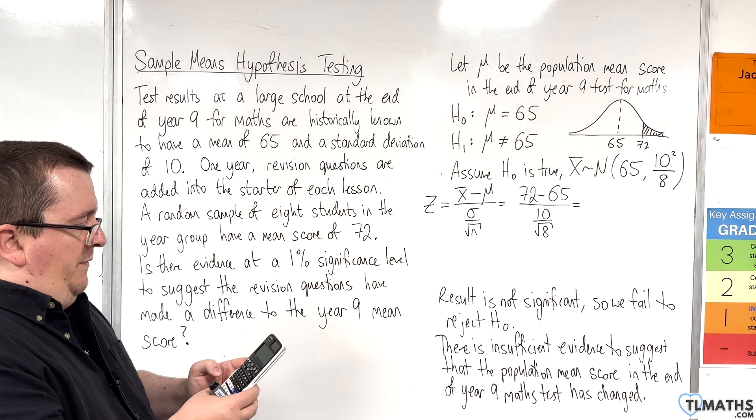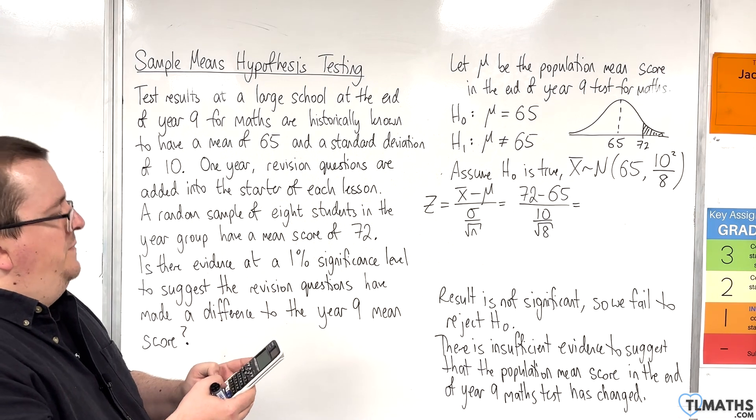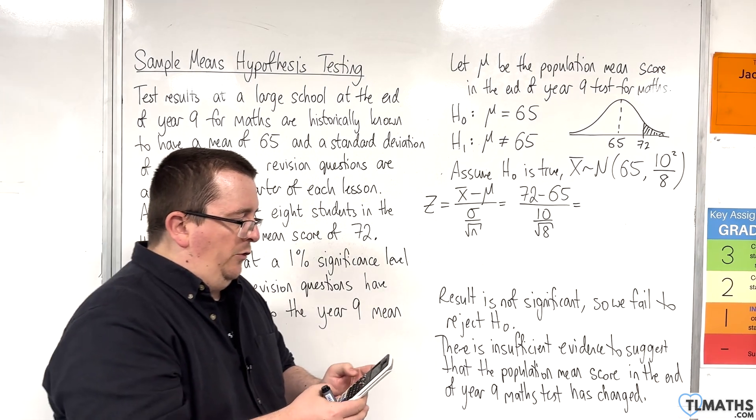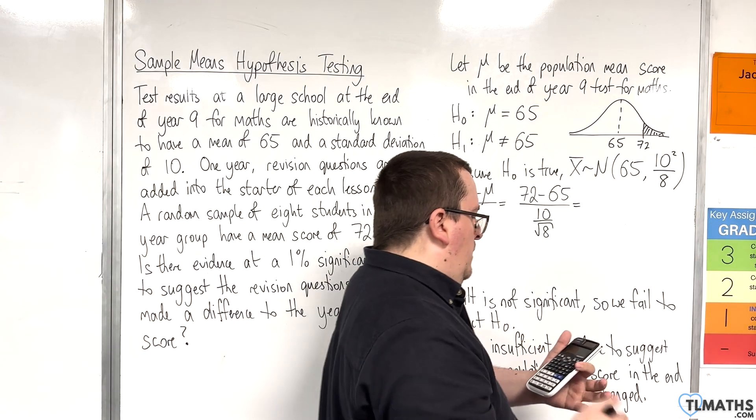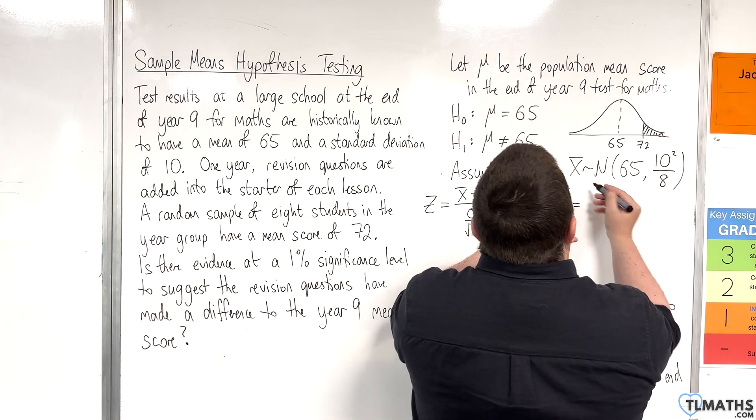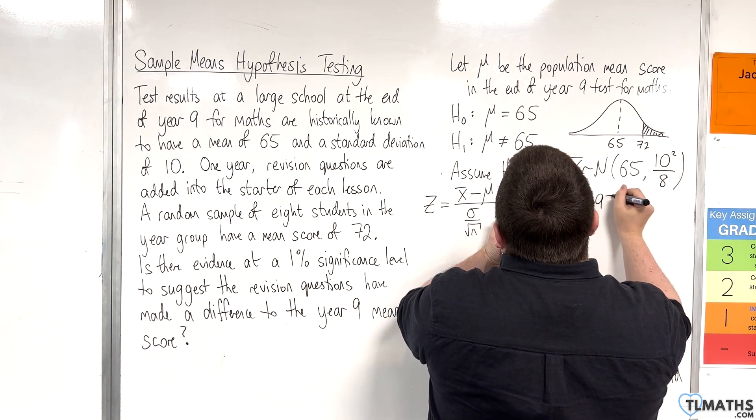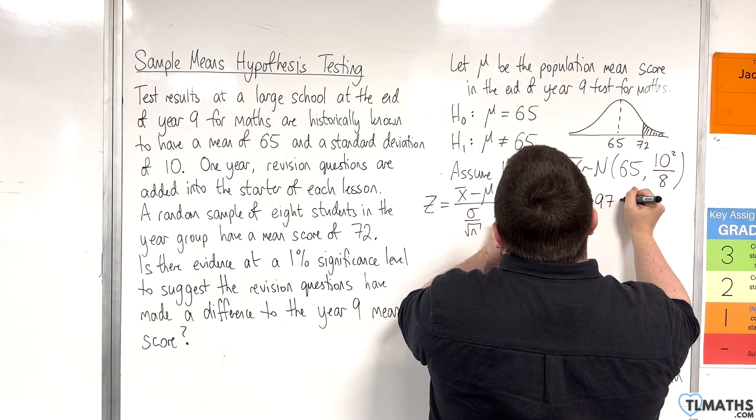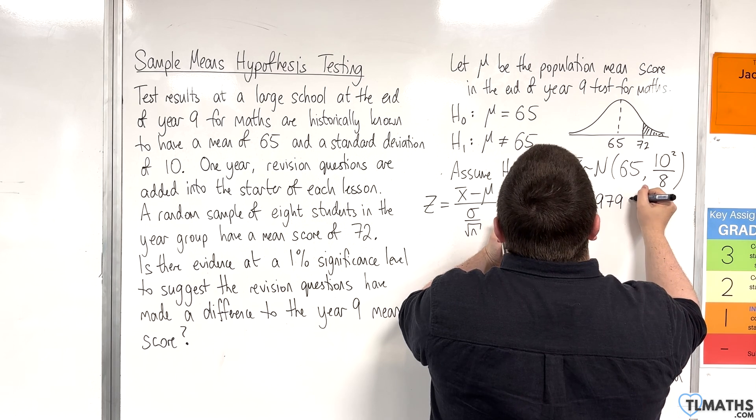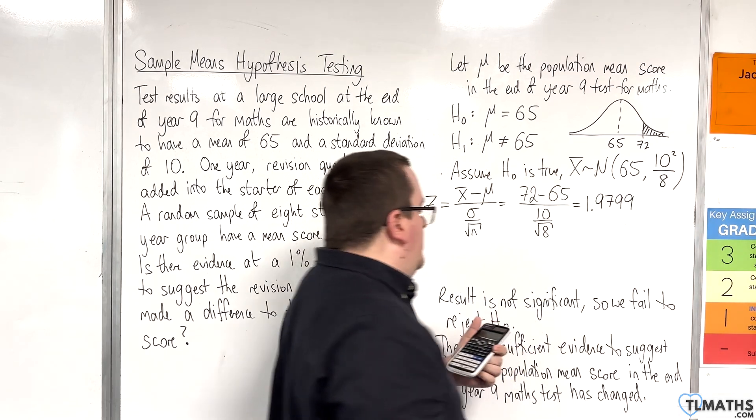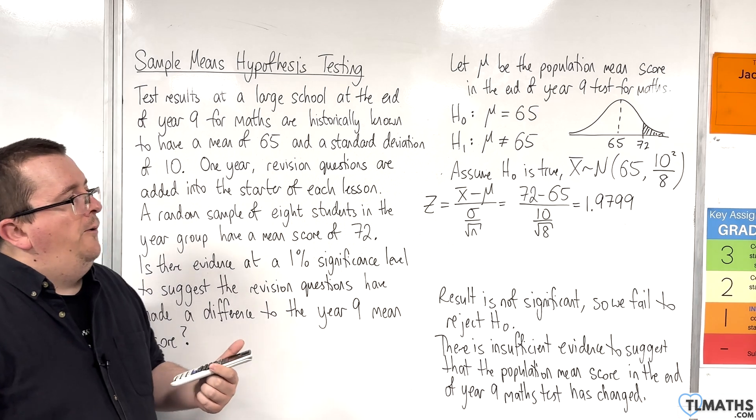Let's put that in the calculator. 72 take away 65 divided by 10 over the square root of 8. And that's 1.97989. So let's put 1.9799 to 4 decimal places.